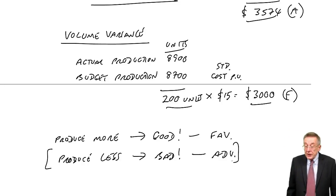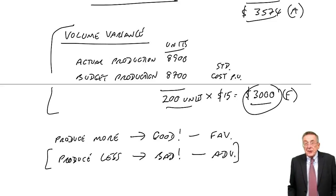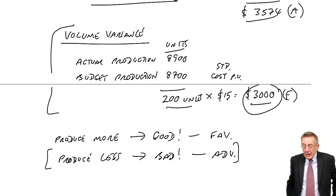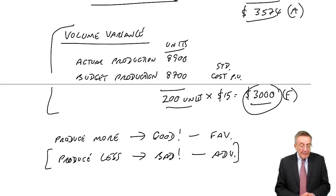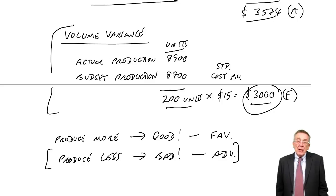However, although I'd love to finish there, I'm afraid I can't, because you could be required to analyze that volume variance. Effectively to say, why did we produce more? Now, what's coming in some ways is a little bit silly. I don't know. But the thing is, why did we produce 3,000 more units?